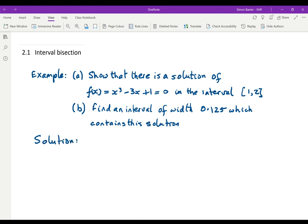The first part is quite straightforward, something which we've done many times. We first of all find f(1) which equals 1 minus 3 plus 1 which is minus 1. f of 2 is going to be 8 minus 6 plus 1 which is 3.